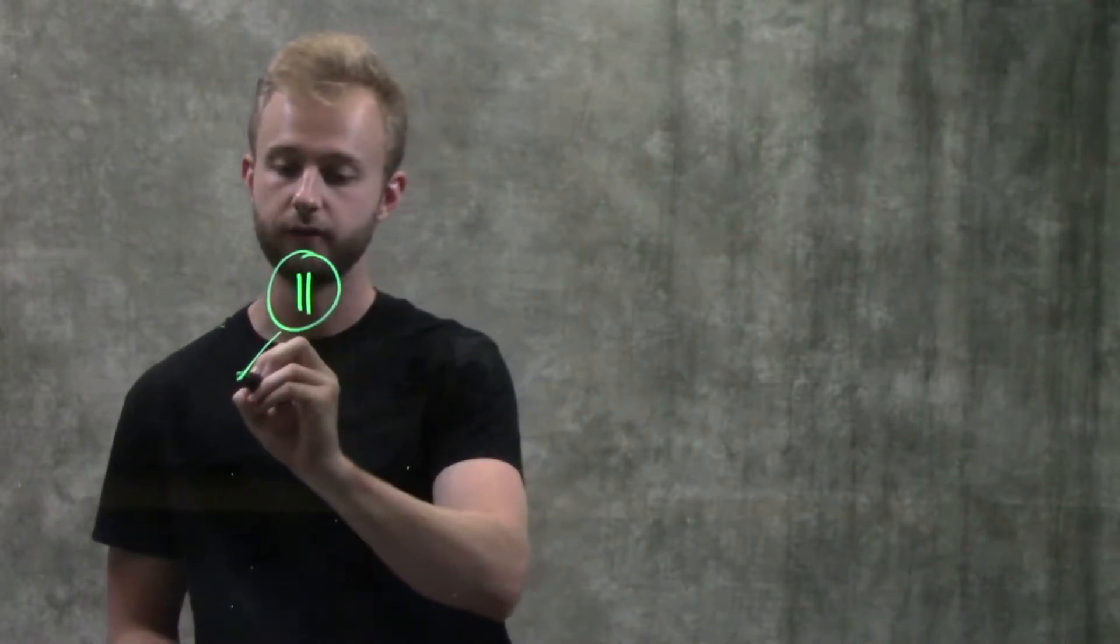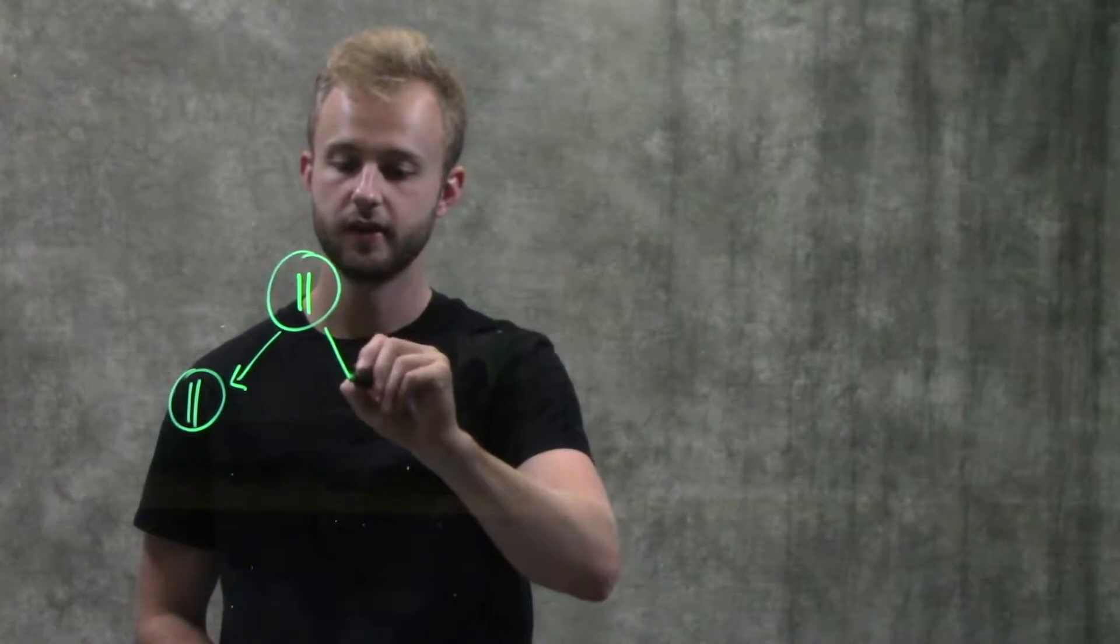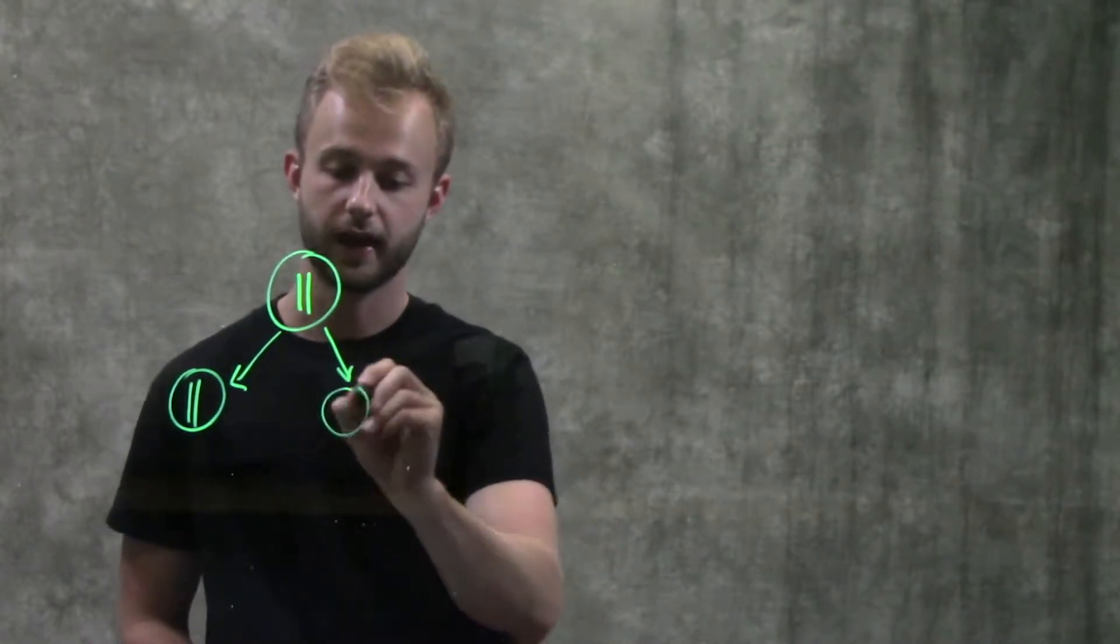So for example, if we have the two chromosomes failing to separate, or the two sister chromatids failing to separate during anaphase II of meiosis, we would have one gamete that would have both of these sister chromatids, and then we would have another gamete that had none.